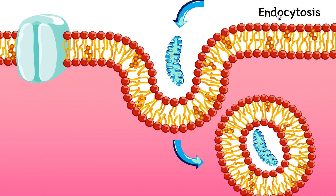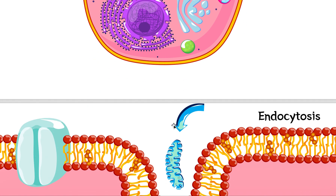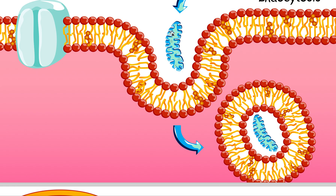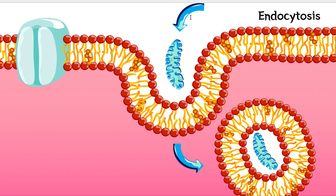"Endo" means into, and "cytosis" means a cell — so endocytosis is a method of bringing things into the cell. Let's pretend this cell is a white blood cell. White blood cells are responsible for defending us against bacteria, so they pretty much just eat bacteria. Let's say we have a really big molecule or a bacterium that our white blood cell wants to get rid of.